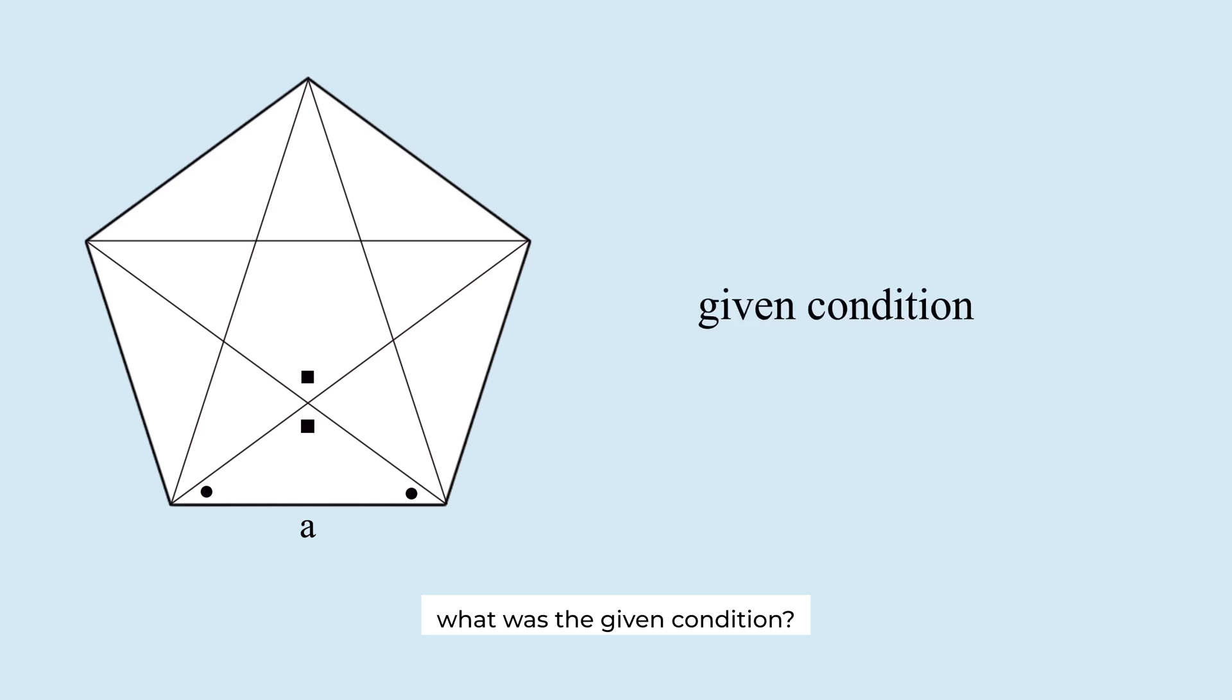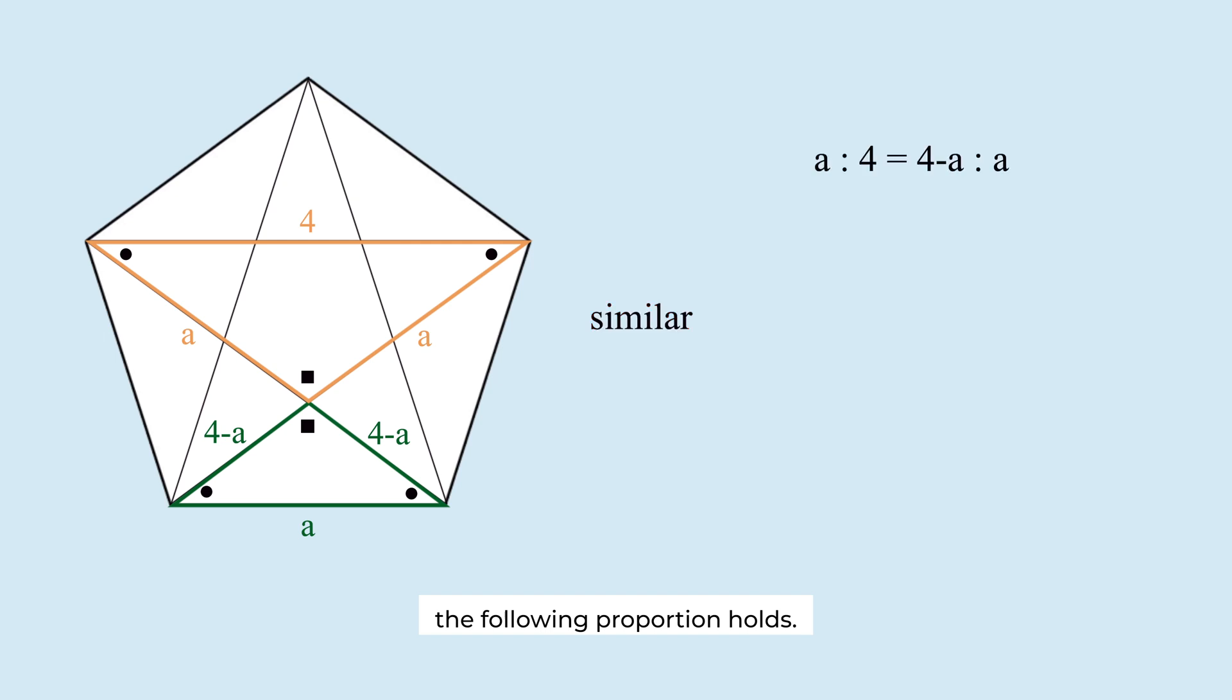What was the given condition? It was this length, which is the diagonal of this regular pentagon. So this length and this length are also 4. And this length and this length are 4 minus A. Since the two triangles are similar, the following proportion holds.